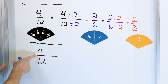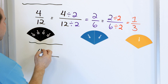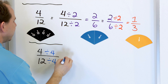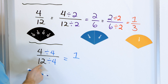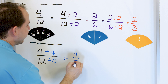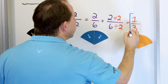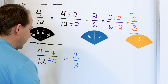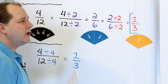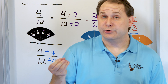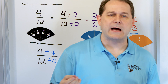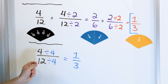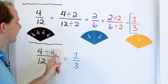Divide this by four and also this by four — divide top by four, divide bottom by four. Four divided by four is one, and twelve divided by four is three. Notice I get exactly the same answer. One-third is the final answer, and I get the same answer no matter how I simplify the problem. If you divide by the largest thing possible, you can get to the simplified answer in only one step.